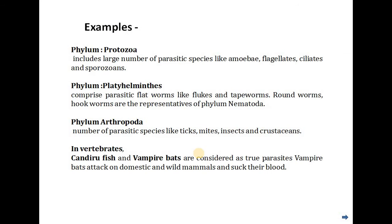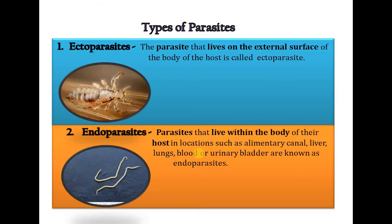Examples from phylum Protozoa include a large number of parasitic species like amoebae, flagellates, ciliates, and sporozoans. Phylum Platyhelminthes comprises parasitic flatworms like flukes and tapeworms. Roundworms and hookworms are representative organisms of phylum Nematoda. Phylum Arthropoda includes parasitic species like ticks, mites, insects, and crustaceans. Among vertebrates, the candiru fish and vampire bats are considered true parasites; vampire bats attack domestic and wild animals and suck their blood.